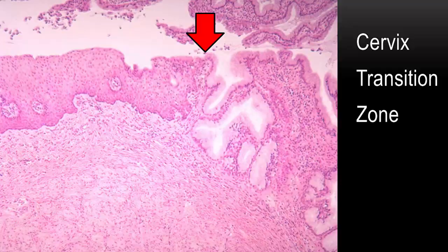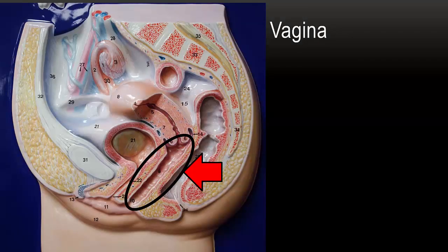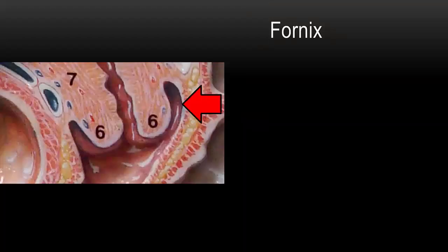Let's take a look at the vagina, seen here in the model. In the next slide, we see the spaces between the cervix and the vaginal wall. The one shown is the posterior fornix — in the plural, fornices. These structures are important in patient care. For example, vaginal suppositories can be placed here. A cervical cap fits into the fornices, as does a diaphragm. And during a vaginal hysterectomy, the peritoneal cavity can be entered through the posterior vaginal fornix.